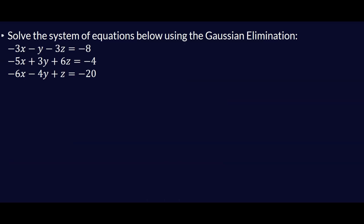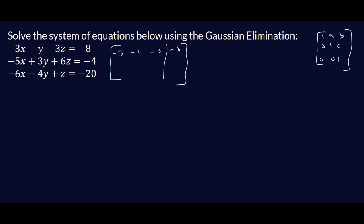Let's solve our first system using the Gaussian elimination method. The augmented matrix is: row 1: negative 3, negative 1, negative 3, negative 8; row 2: negative 5, 3, 6, negative 4; row 3: negative 6, negative 4, 1, negative 20. I'm aiming to get this into row echelon form.